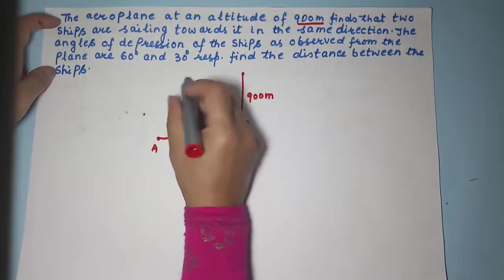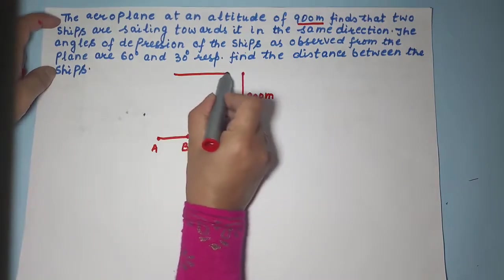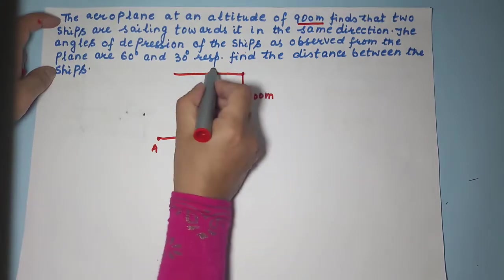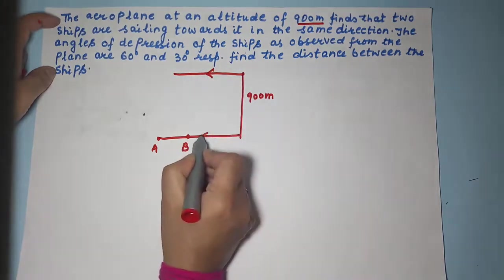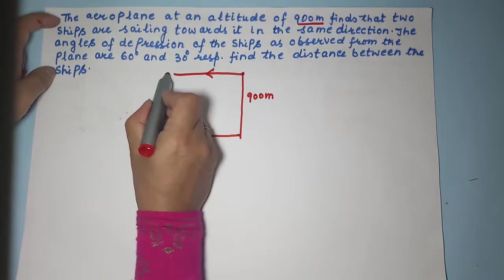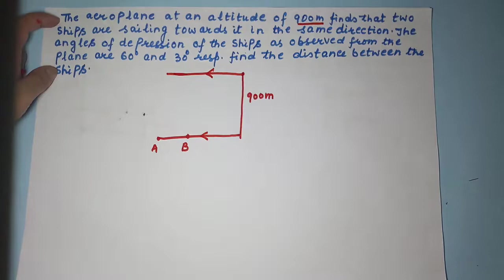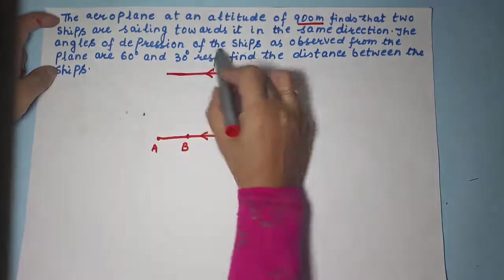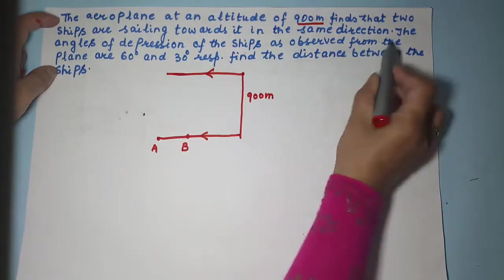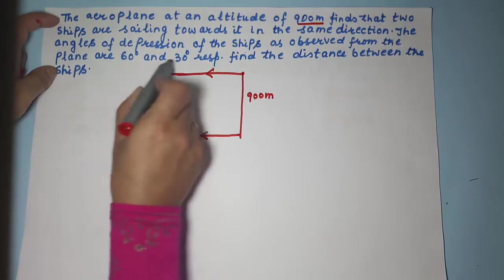The angles of depression of the ships as observed from the plane. So from the plane the angles of depression. We always need to have the reference line which is parallel to the ground line for angles of depression. So we have created that. Now he is saying that the angles of depression of the ships as observed from the plane are 60 and 30.